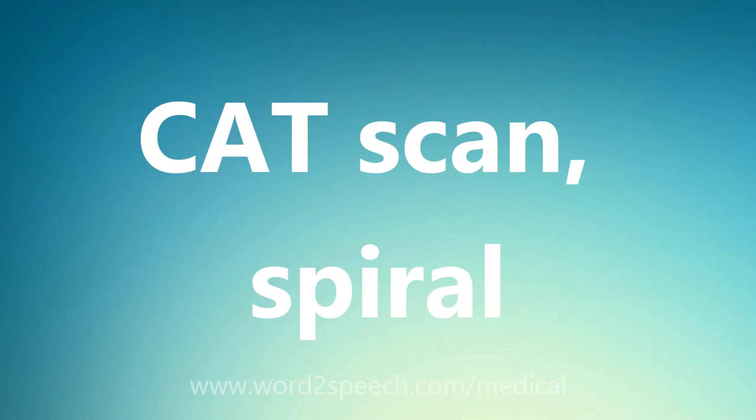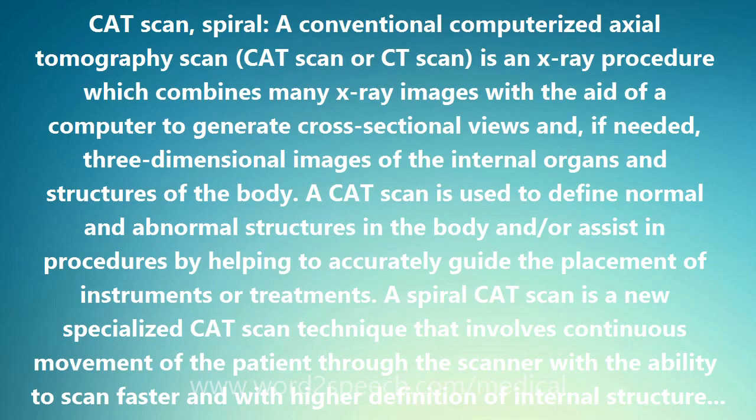A conventional computerized axial tomography scan — CAT scan or CT scan — is an X-ray procedure which combines many X-ray images with the aid of a computer to generate cross-sectional views and, if needed, three-dimensional images of the internal organs and structures of the body.